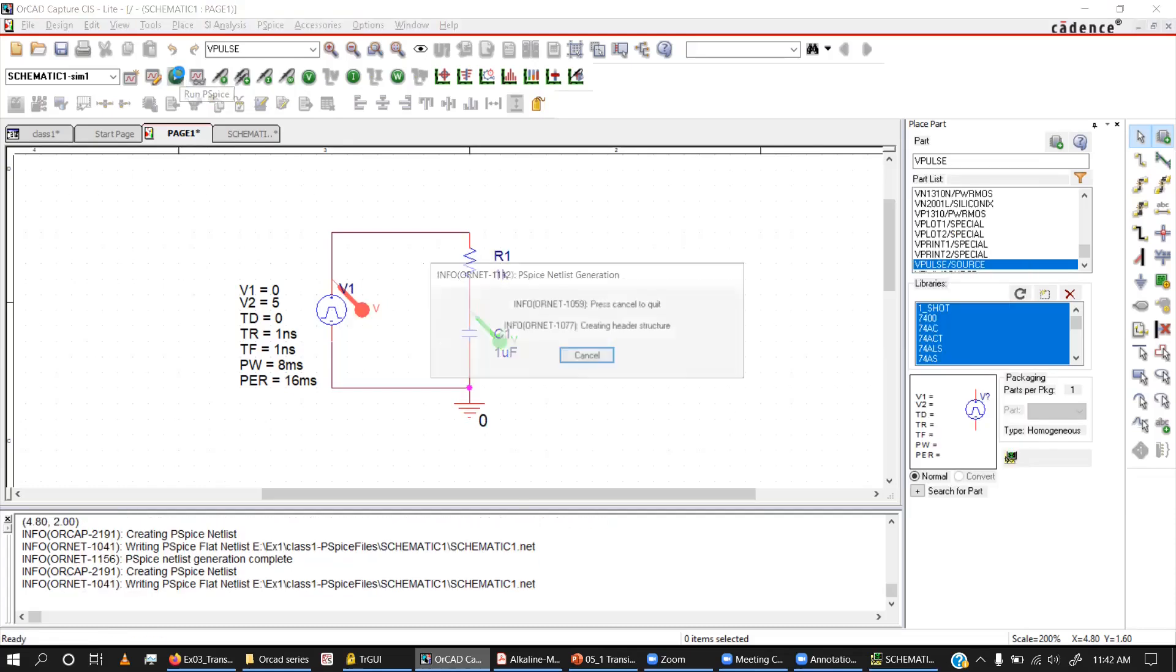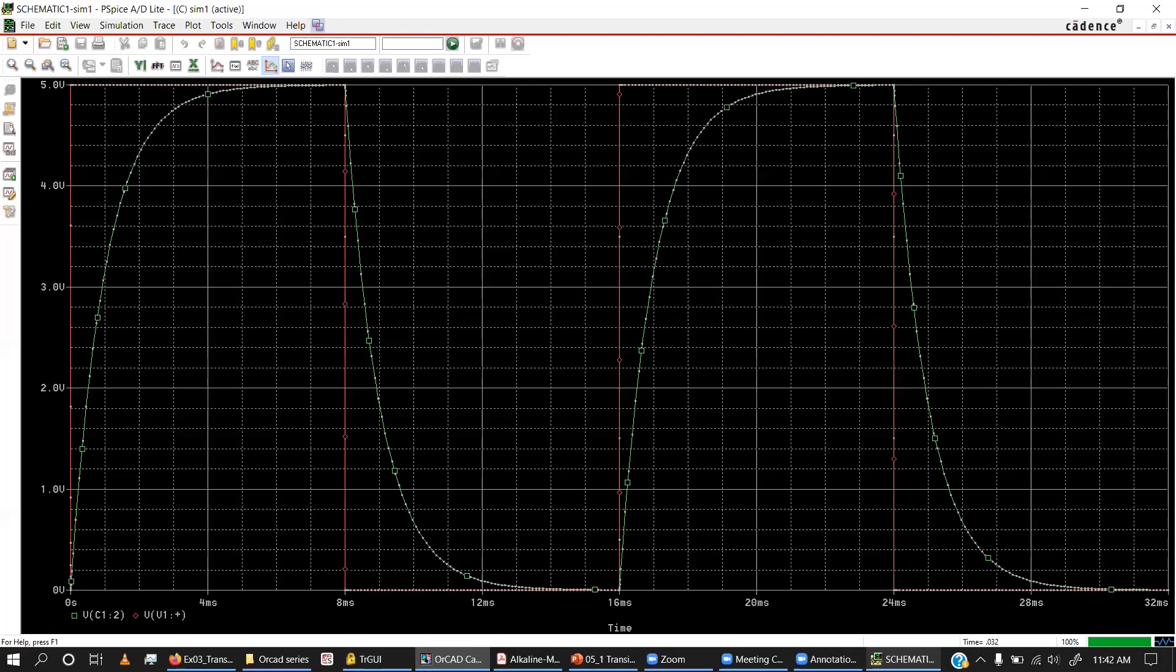Let's run the simulation and see how the output is. Here you can see there are two cycles because it runs for 32 milliseconds. The red one, the square pulse, is generated by the signal generator.